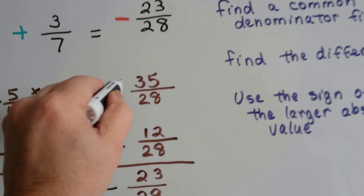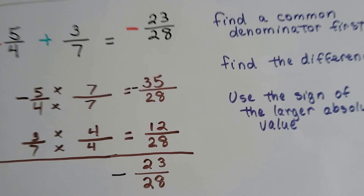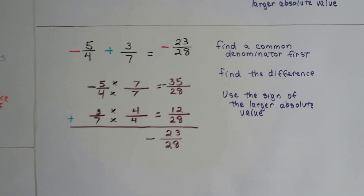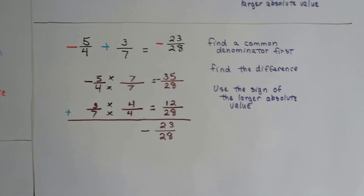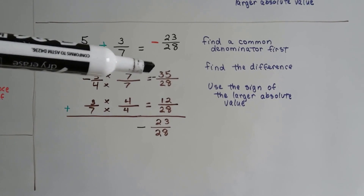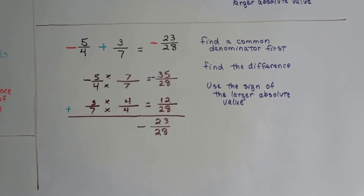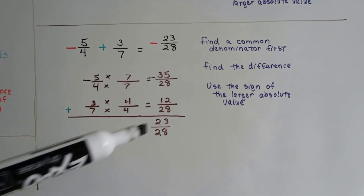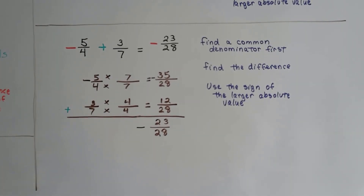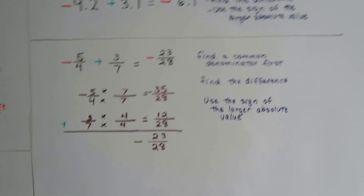There actually should be a negative here. You just take the sign of the greater absolute value, and 35 over 28 is a greater absolute value than 12 over 28. Take the sign of the larger absolute value.